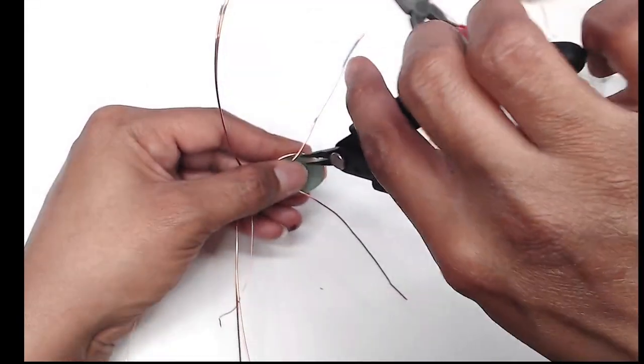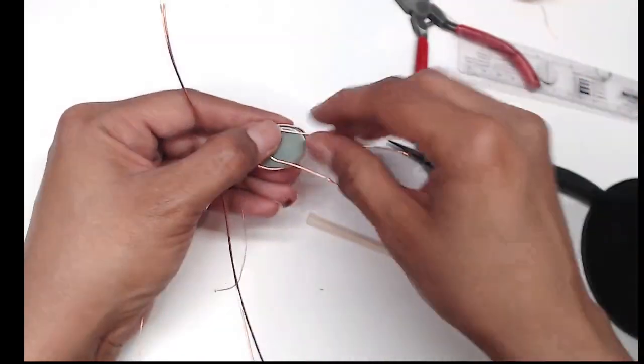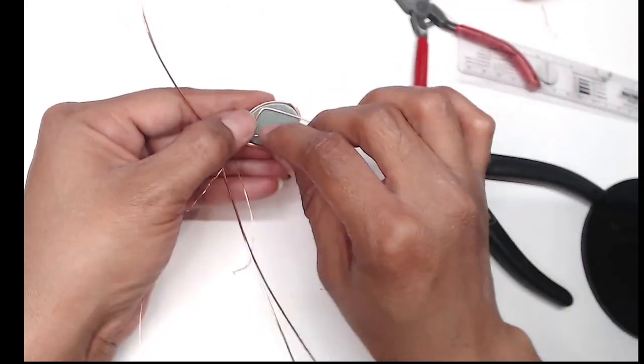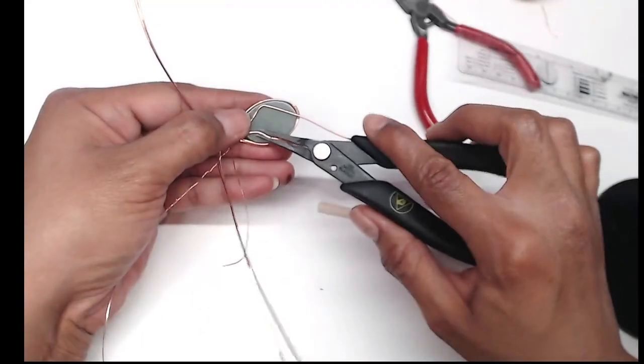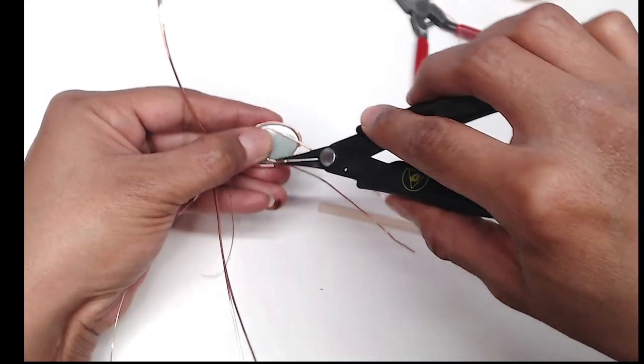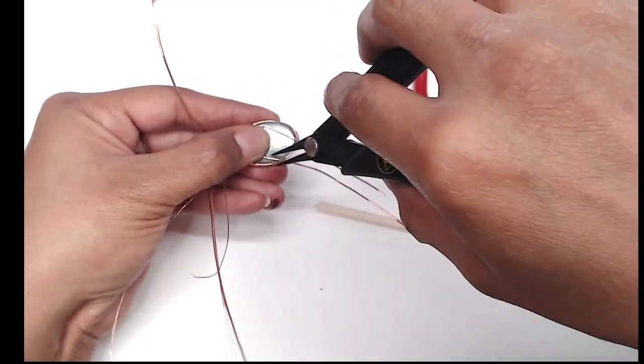You want to make sure to bend it close to the edge and this will help keep the edges of your pendant secure so that the cab doesn't slide out. So get as close to the edge on both sides and then bend it in.